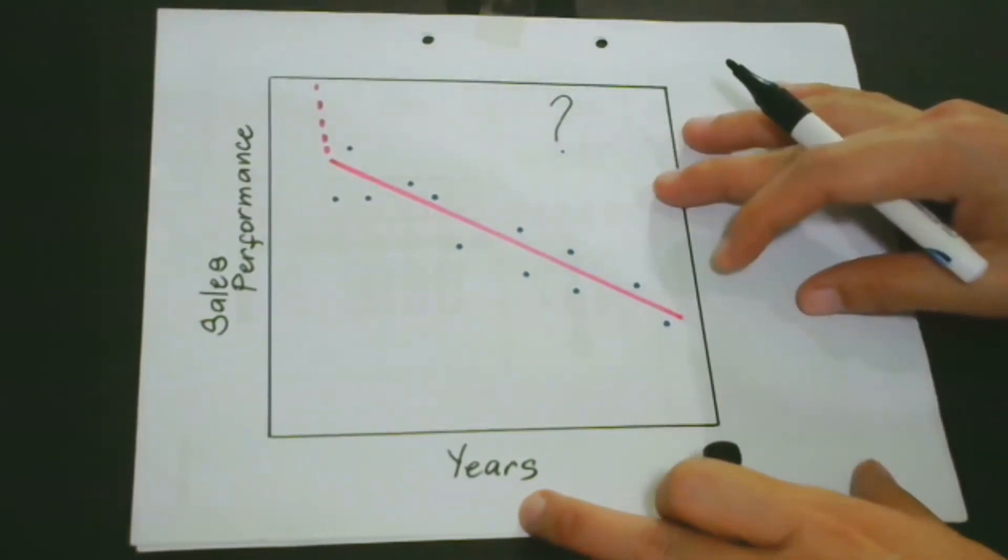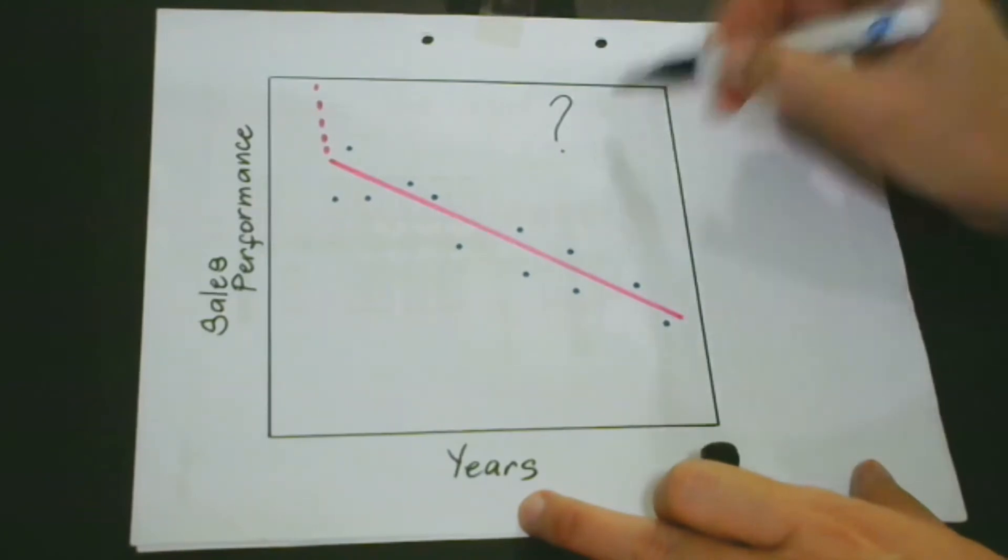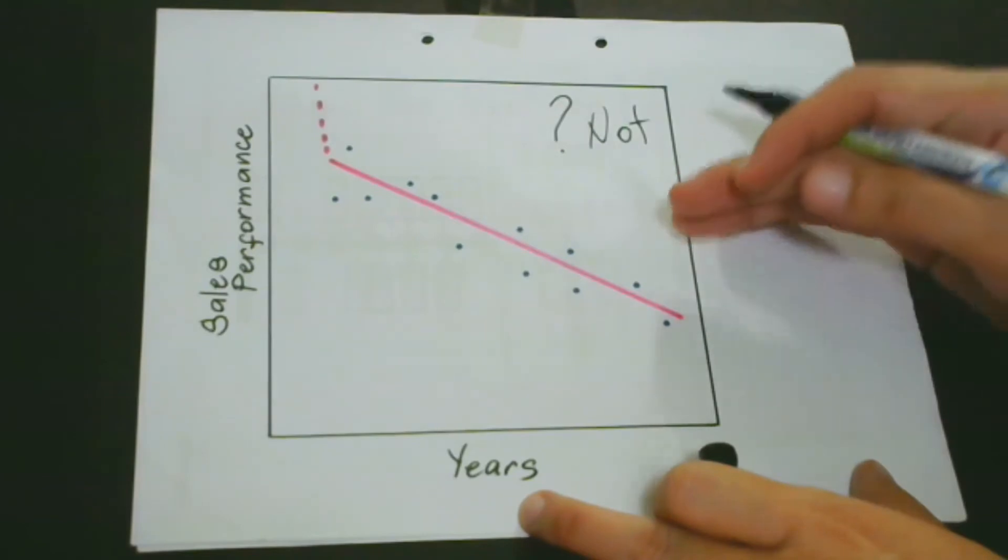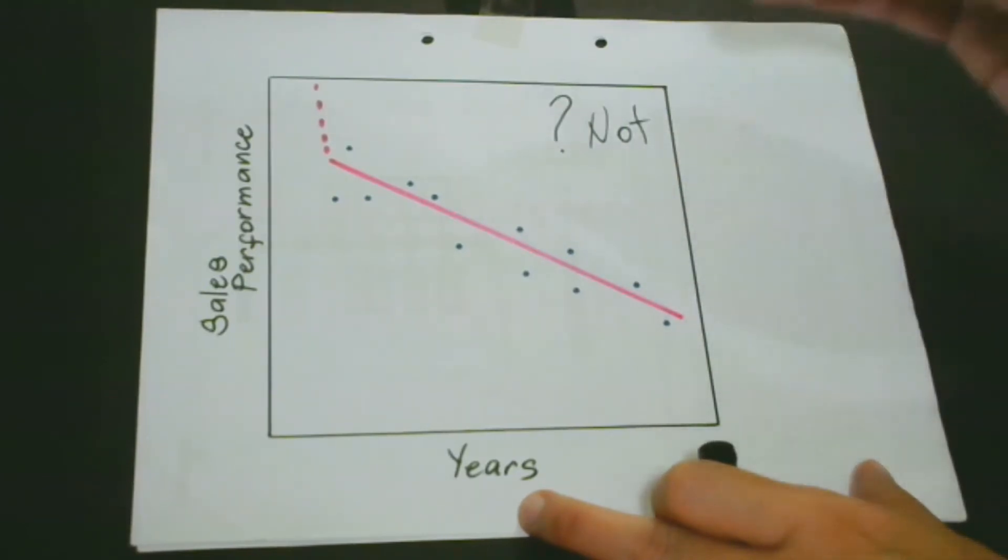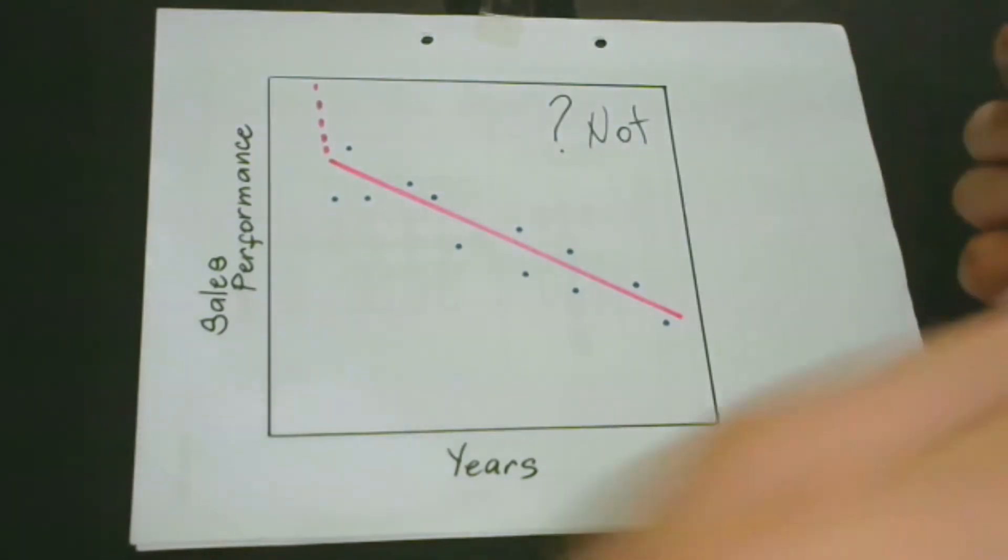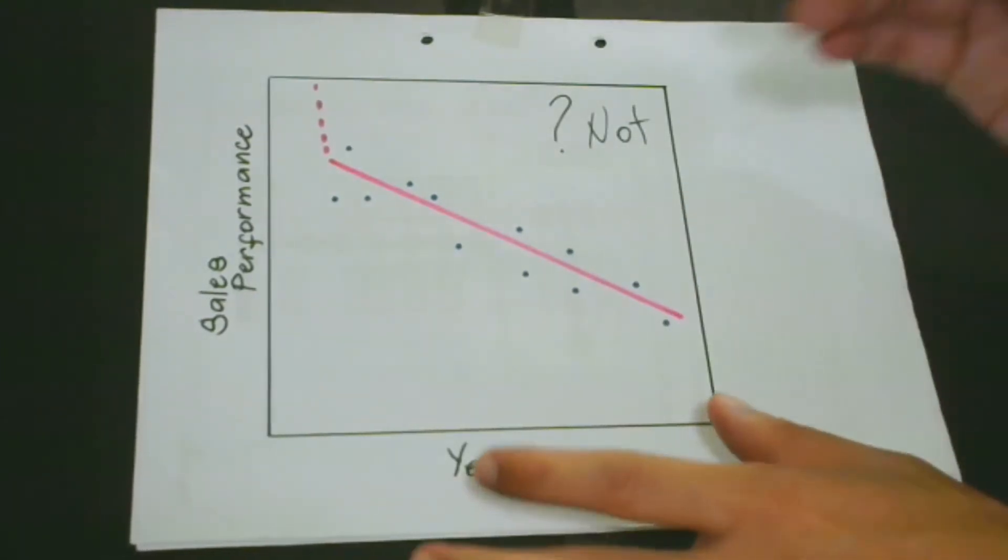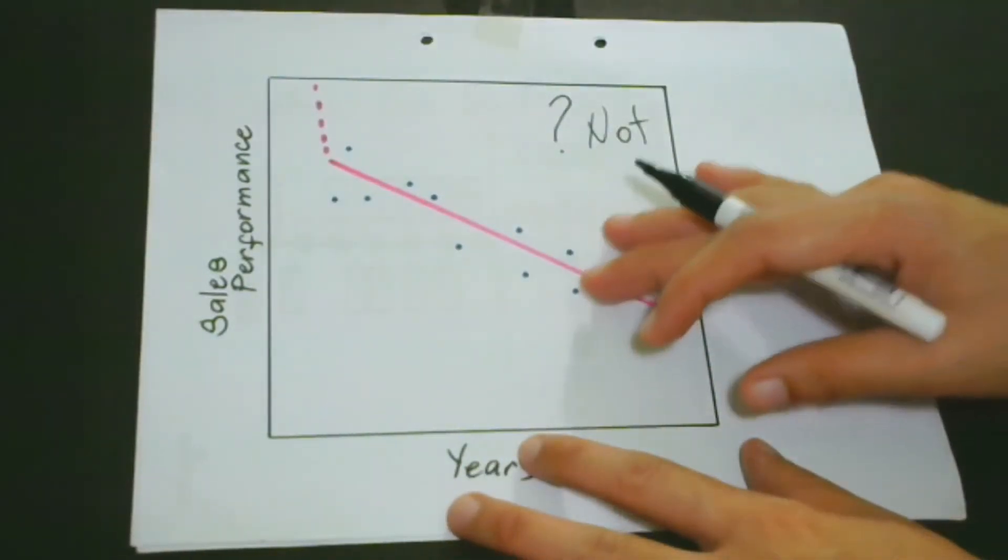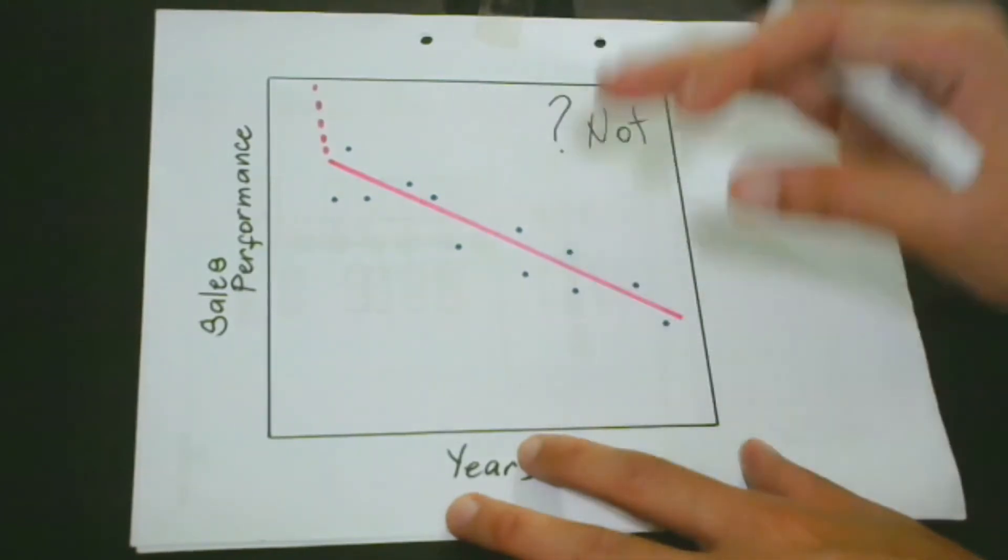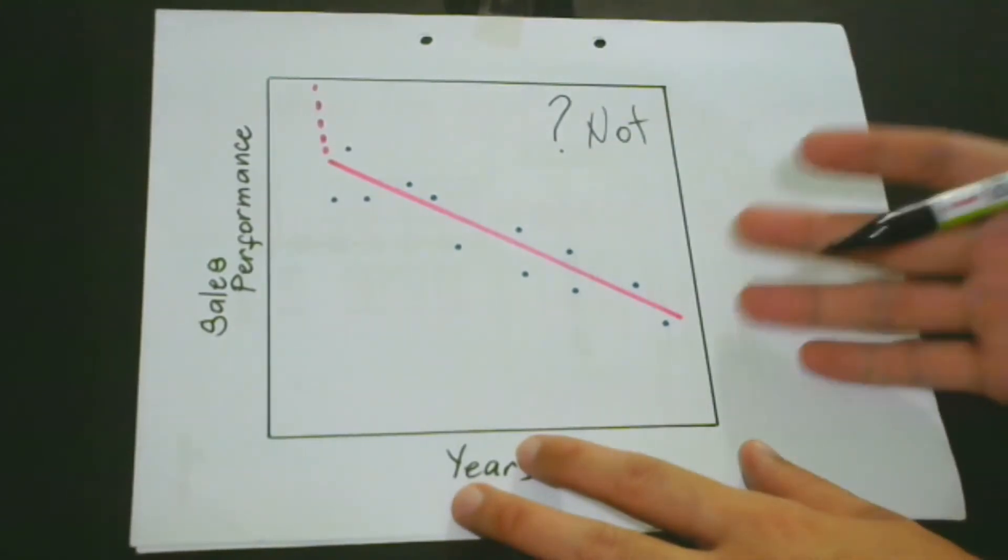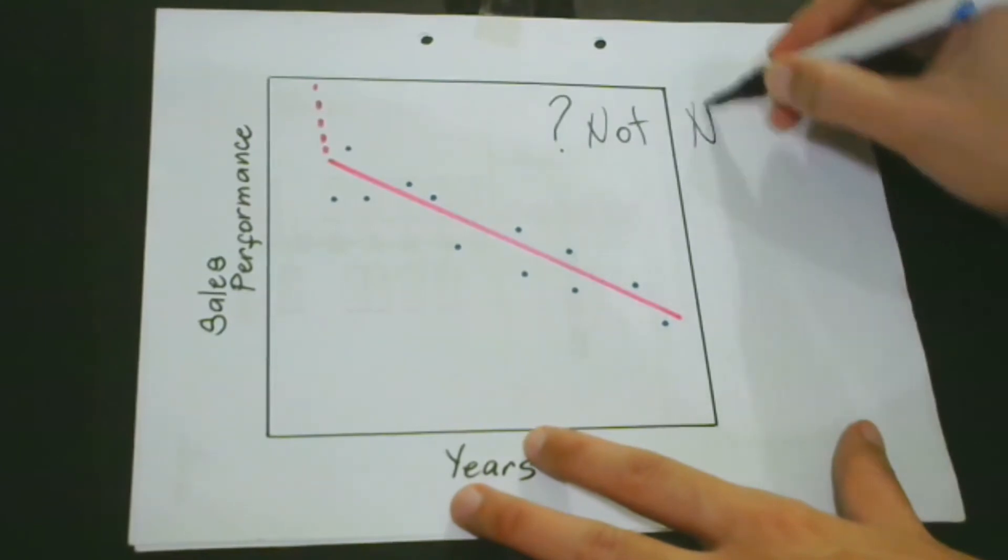Our model does not explain our data perfectly. Our end goal is to have a model that best, not really perfectly, but best describes our data points or our trend. There is noise here. Again, there is noise here.